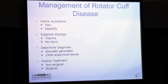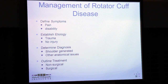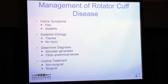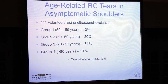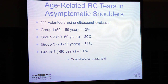Now let's talk about management. We define the symptoms, understand the patient's disability and pain, and establish the timing. We want to establish etiology — was this work-related or non-work-related, chronic or acute? We determine the diagnosis and then outline treatment. An important question is: what's injury-related versus what's present simply because we're aging, active individuals?